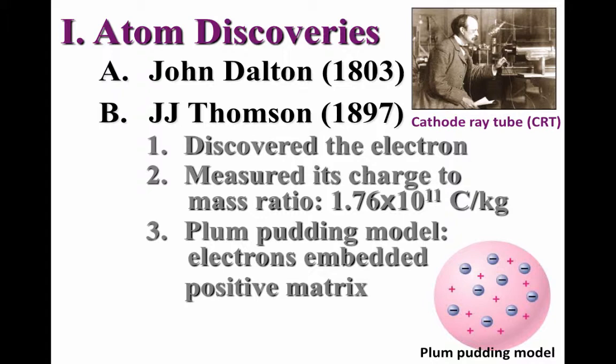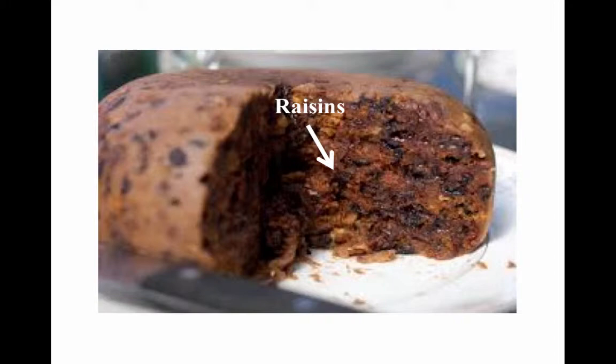This led to a new model of the atom, one in which the majority of the atom was this spread out, diffuse, positively charged material with negatively charged particles embedded in it. It was called the plum pudding model, named after a popular English dessert made of pudding containing raisins.